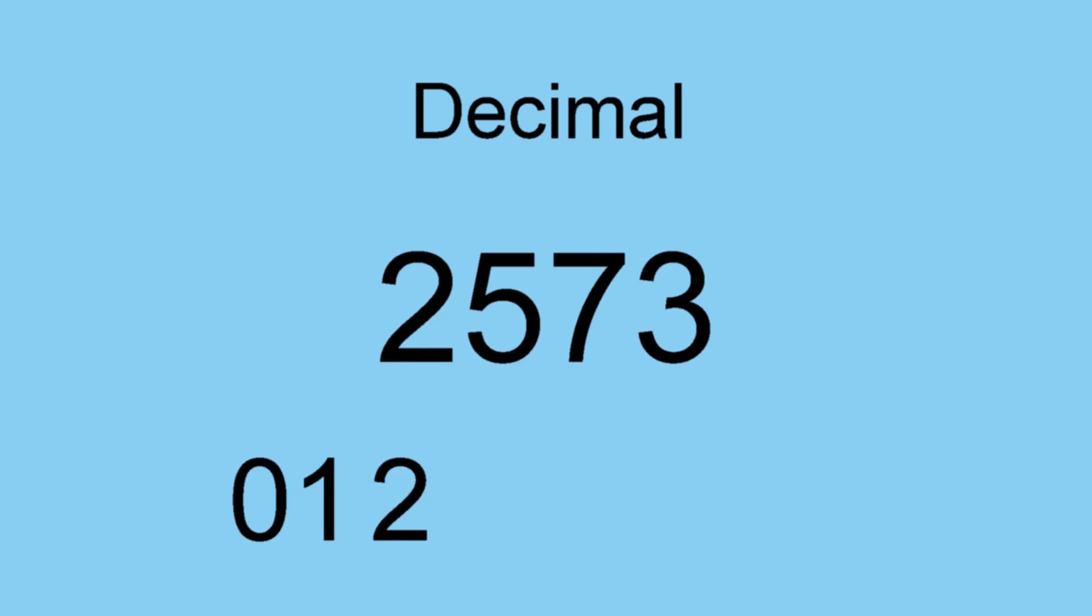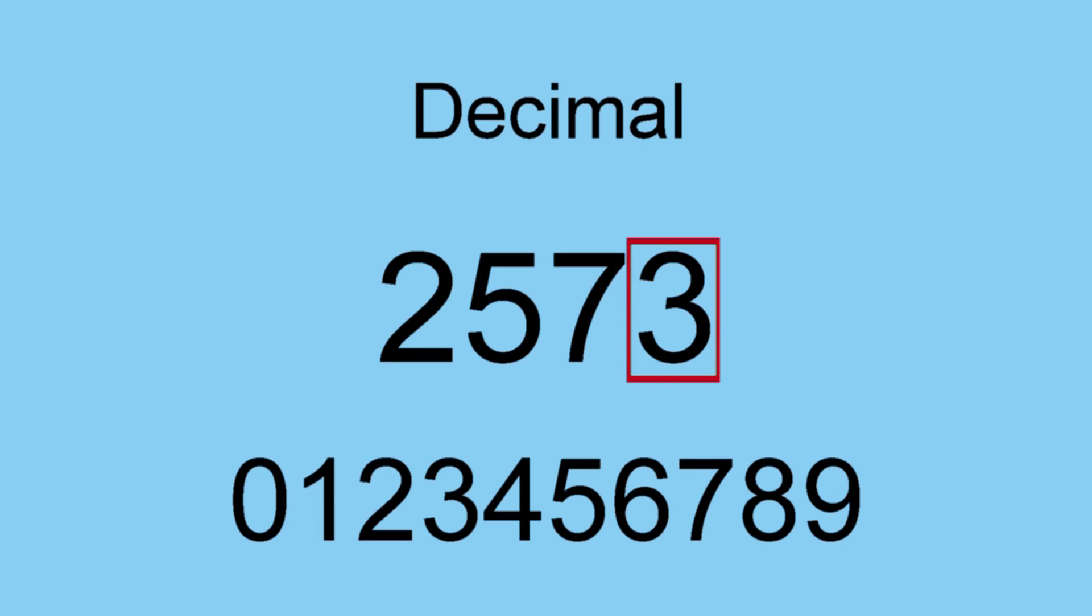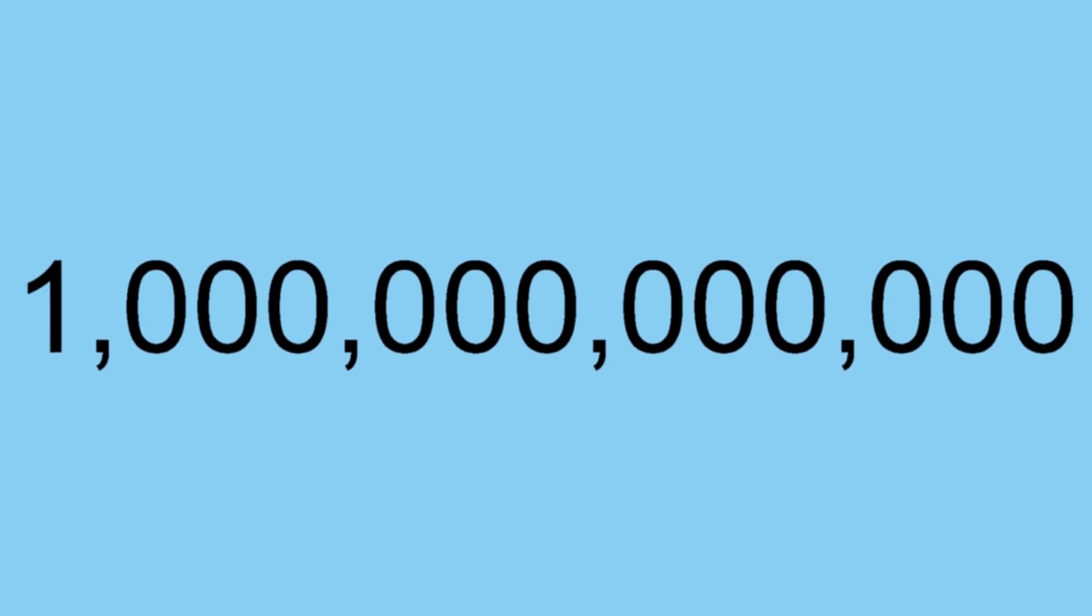Of course, we're all familiar with the decimal system, a base 10 system. Here, each place increments by a factor of 10. 1, 10, 100, 1000, and on and on. A trillion is 1 with 12 zeros behind it.